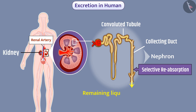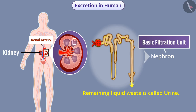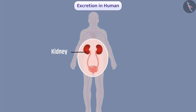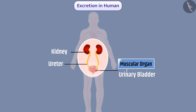The remaining liquid waste is called urine. Since the filtration work in the kidney is performed by the nephron, it is called the basic filtration unit. Each kidney is connected to the bladder by a long tube called a ureter, which carries urine from the kidney to the bladder. The bladder is a muscular organ in which urine is stored.